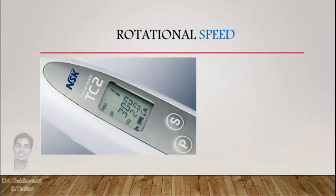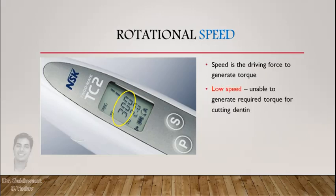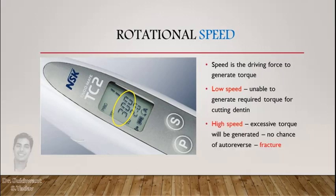Rotational speed is also important — speed is the driving force for generation of torque. If speed is lower than recommended, it will not generate enough torque to cut dentine. If speed is too high, excessive torque will be generated and that will not give the instrument a chance to auto-reverse when torque exceeds the safe limit, and the instrument can fracture.